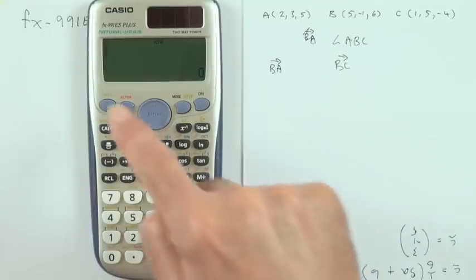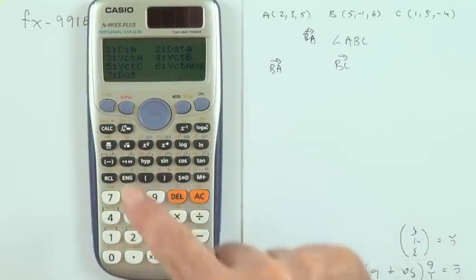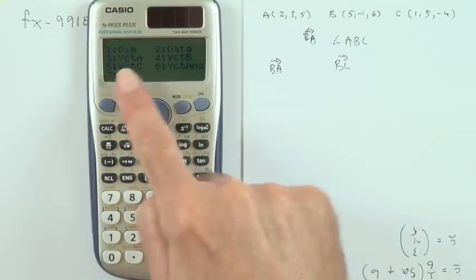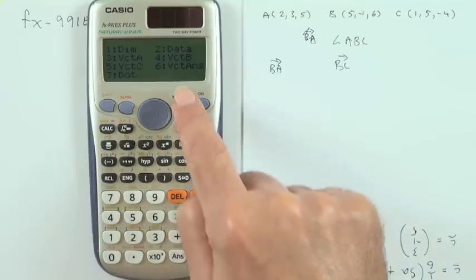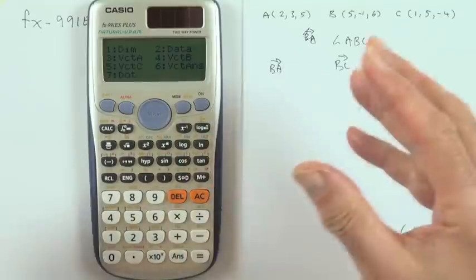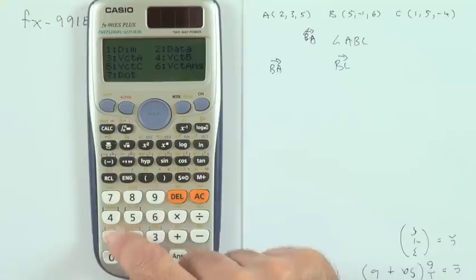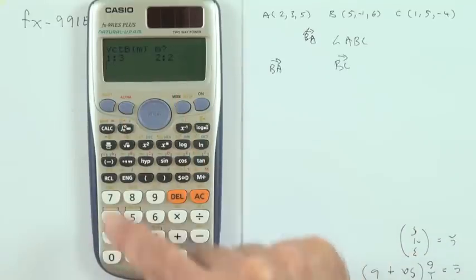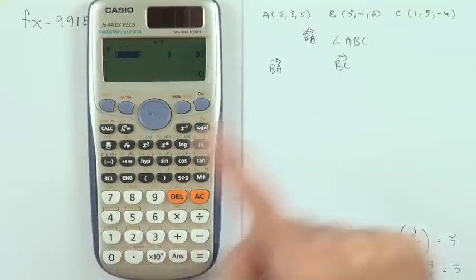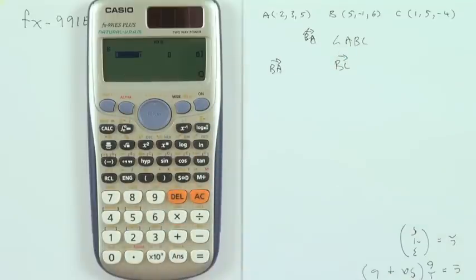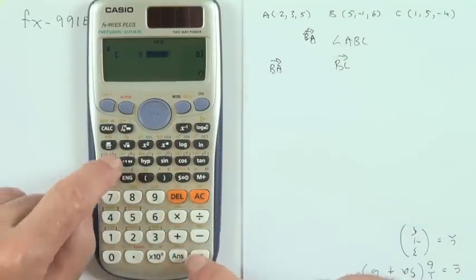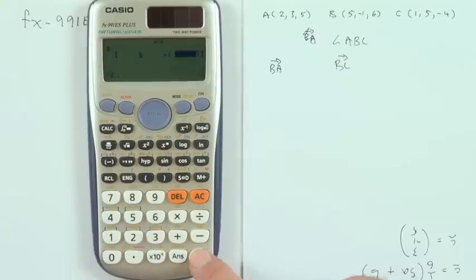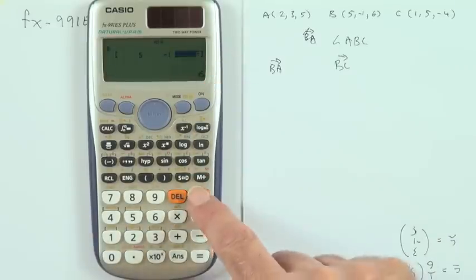To enter B, go to the vector menu itself, that was shift 5, and I'll need to dimension it before I use it. Don't just try and call up vector B, it'll just come up with error. So press 1, select 2 for vector B, dimension it, it's a 3-dimensional one: 5, negative 1, 6. Now I can enter the data: 5, negative 1, 6. Make sure you press equals and that 6 appears there. Now I can clear it.